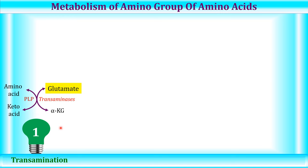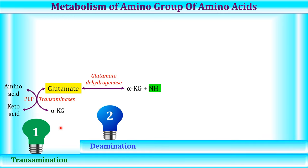Transamination is followed by deamination, which means removal of the amino group from glutamate. This process occurs in the mitochondria by the mitochondrial enzyme glutamate dehydrogenase. It requires either NAD or NADP, and then glutamate is converted into alpha-ketoglutarate and ammonia is released. This ammonia, released in the form of ammonium ion, has multiple fates: synthesis of glutamate, glutamine, or urea, or it can be utilized in formation of purines, pyrimidines, asparagine, and various amino sugars.